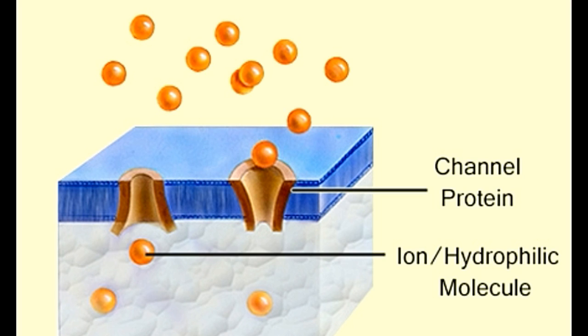Examples of channel protein mediated passive transport: ion channels are not continuously open and are said to be gated, which open only in response to specific stimulus. Voltage gated channels, these ion channels are activated when there is a potential difference generated across a biological membrane.